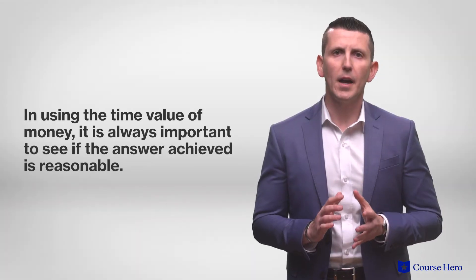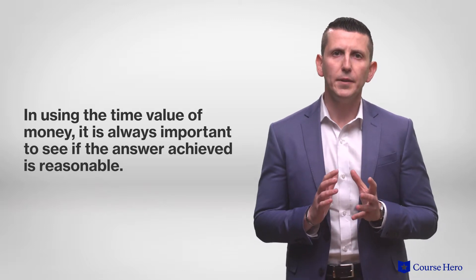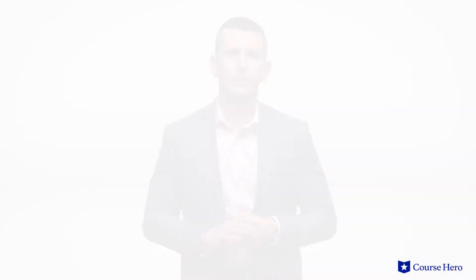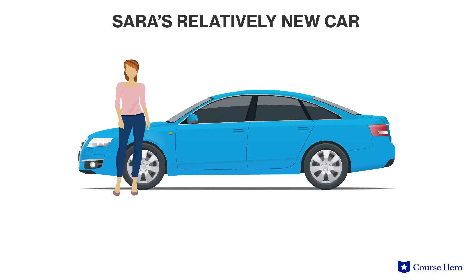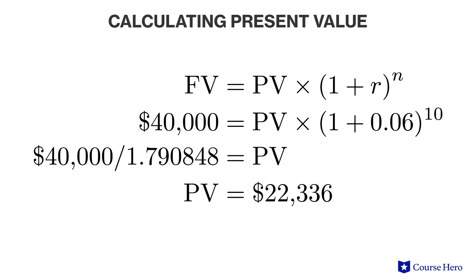In using the time value of money, it is always important to see if the answer achieved is reasonable. Since a sum of money in the future is nominally almost always more than a sum of money in the present, it makes sense that $40,000 a year from now will be worth slightly less at the present time. Assume that Sarah already has a relatively new car and plans to wait 10 years to buy a new one. She wants to have $40,000 set aside for the car and can earn 6% on her investment. In this case, the compounding periods are 10, which reduces the present value to $22,336.